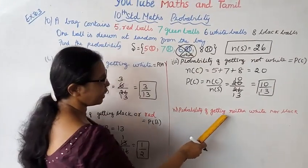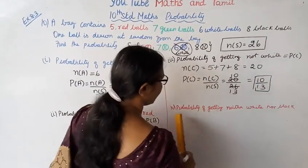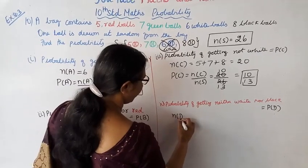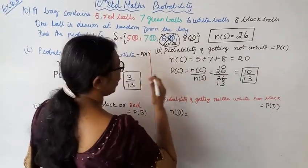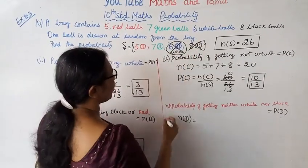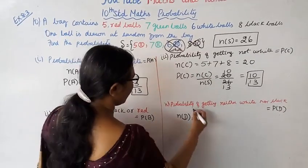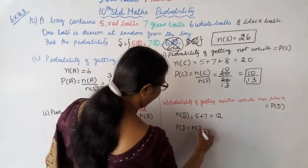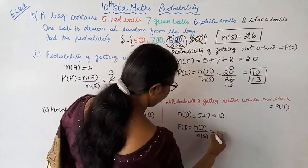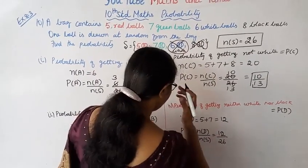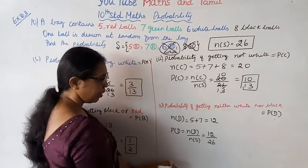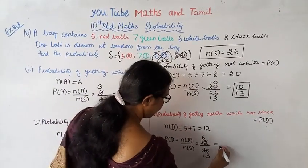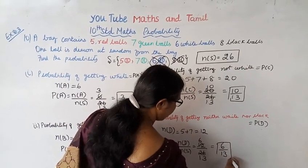Fourth, probability of getting neither white nor black. P(D). n(D) - neither white nor black means only red and green remain. 5 plus 7 equals 12. P(D) equals n(D) by n(S), that is 12 by 26. Simplifying 12 by 26: 2 sixes are 12, 2 ones are 2, 2 threes are 6, so this equals 6 by 13.